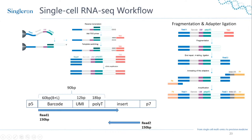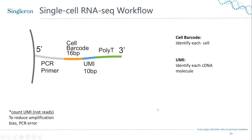After amplification, these fragments need to be fragmented further, and you add the Read 2 primer and an index — if you want to sequence more than one sample you need a barcode identifying that sample — and finally P5 and P7 adapters compatible with Illumina sequencing. Read 1 captures the cell barcode, UMI, poly-T tail, and the beginning of the insert, while Read 2 captures the sample index and the gene sequence. The cell barcode is unique per bead and identifies each cell, while the UMI is unique per cDNA molecule and allows you to correct for amplification bias by collapsing multiple copies into one count.